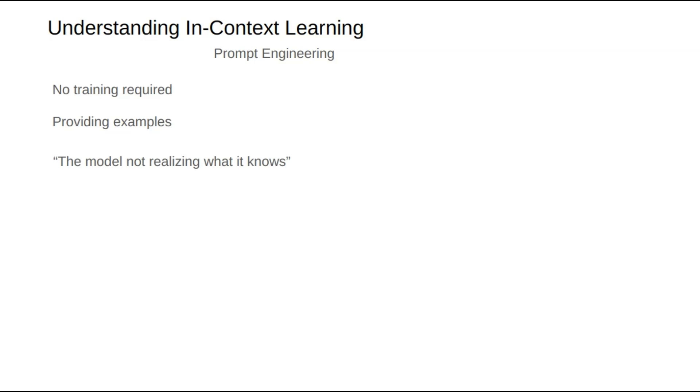Similarly, when examples are provided to the model, it realizes it can perform the task. The essence of in-context learning is using real examples to trigger a specific capability of the model.